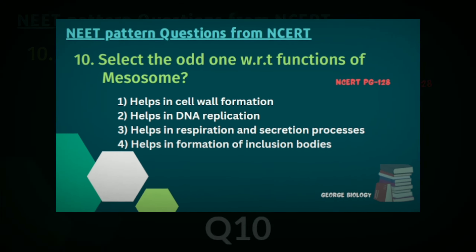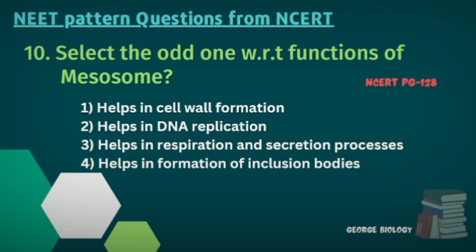Question ten: Select the odd one with respect to functions of mesosome. Options: helps in cell wall formation; helps in DNA replication; helps in respiration and secretion process; helps in formation of inclusion bodies. The odd one is the fourth option — helps in formation of inclusion bodies.